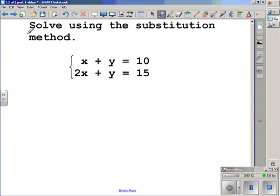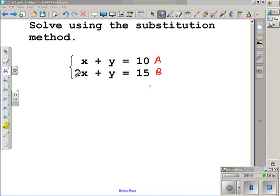So it says solve using the substitution method. One of the things I like to do is label my equations. In this case, I'll label them A and B, and this will be for keeping things straight throughout the problem. If we look at equation A, x + y = 10, we notice that both the x and y variables have coefficients of 1.